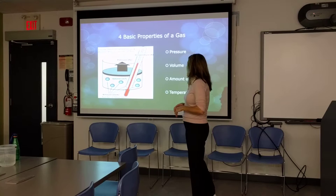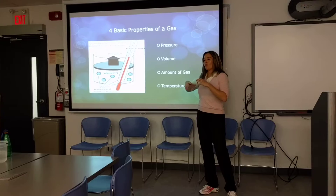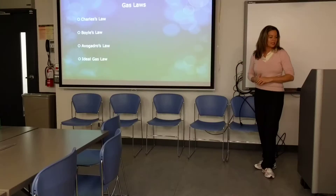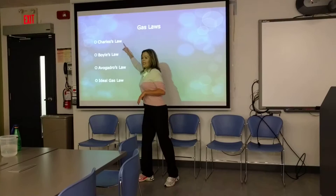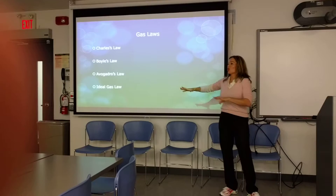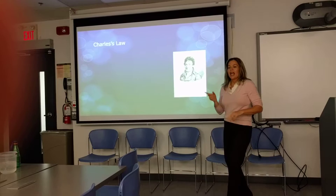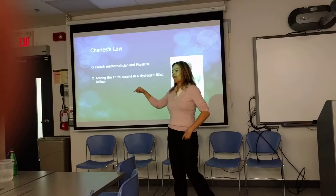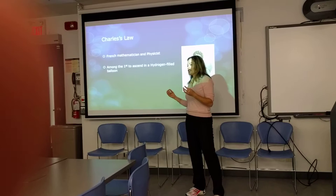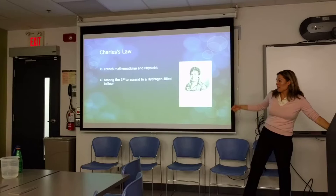There were some scientists a long time ago who said they wanted to understand these properties and how they relate to gases — what happens if changes are made. These scientists created some laws. Charles looked at volume and temperature. Boyle looked at pressure and volume. Another looked at number of moles and pressure. And the ideal gas law puts it all together. Charles — J.A. Charles — was a French mathematician and physicist. An interesting thing about Charles was that he was among the first to ascend in a hydrogen-filled balloon, so he had a real fascination with gases. He quantified the relationship between volume and temperature of a gas.